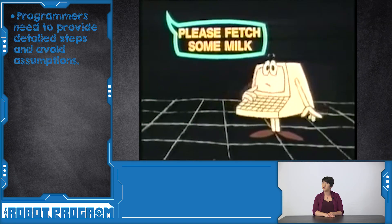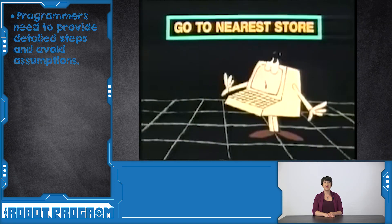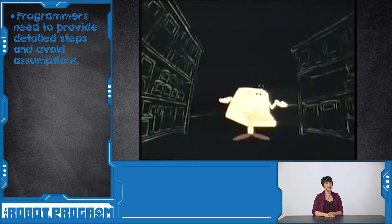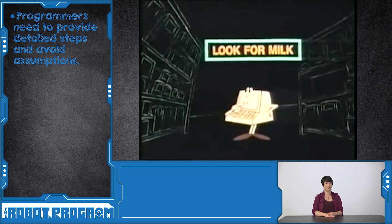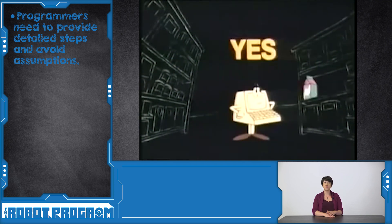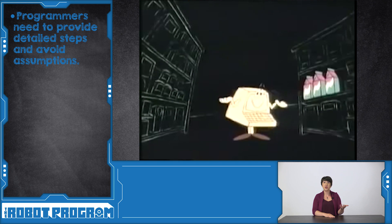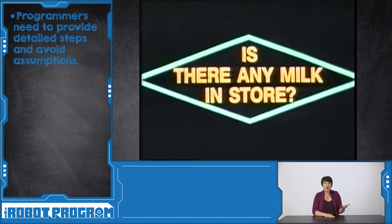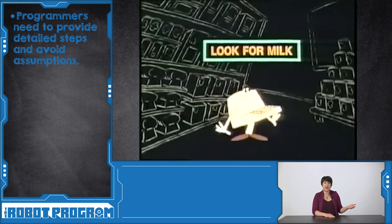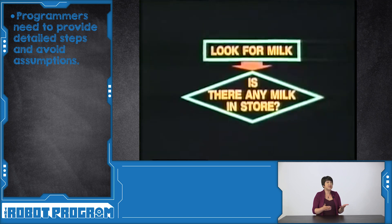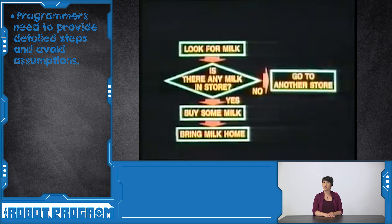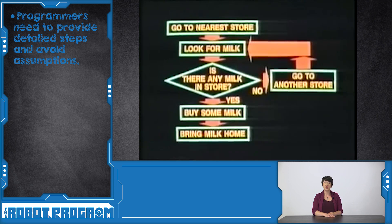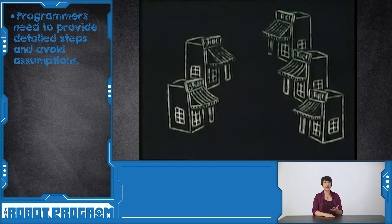Now computers can't make assumptions, which means we need to provide every single step and decision. For example, if I tell you to walk forward, you're going to have some questions for me — like, how far do I walk? How big of steps do I take? What happens if I run into something? When you're programming a robot, you have to think about all of these different elements, or something might not work the way you thought it would.